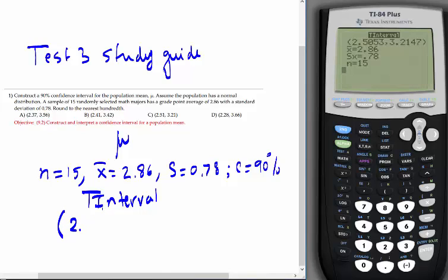2.51, comma 3.21. So we can say with 90% confidence that the true mean GPA average of math majors is between 2.51 and 3.21. This is how we do this one on the calculator.